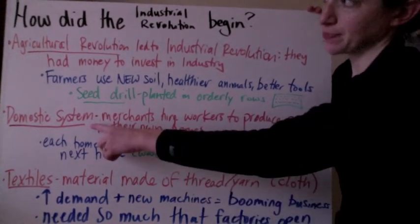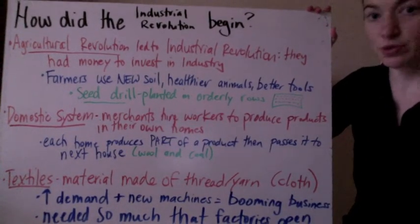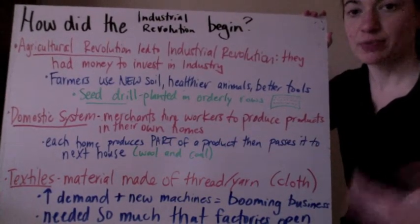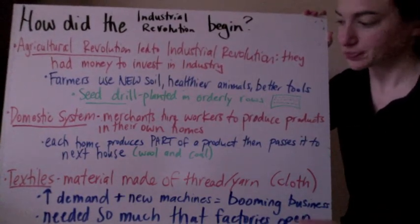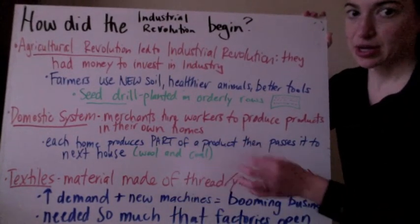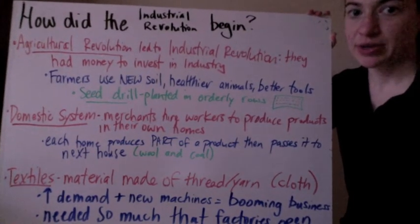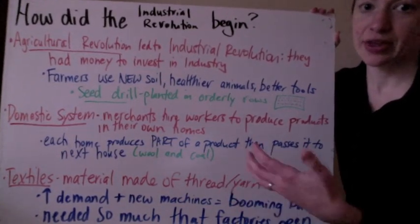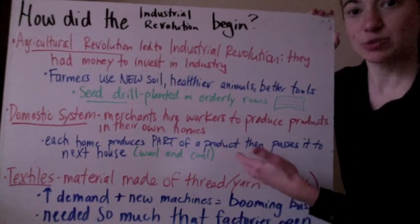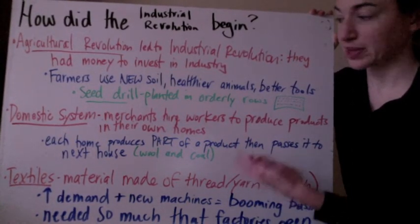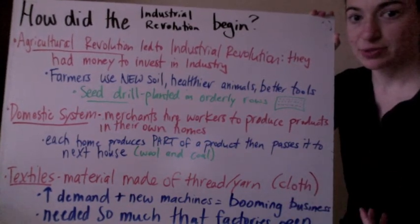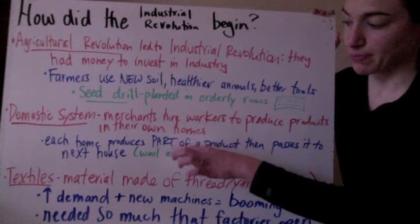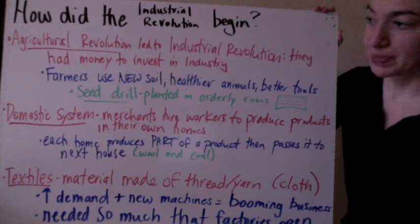The domestic system is another thing that's going to lead to the revolution. This is when merchants — people that sold things — would hire workers to produce products in their own homes. You'd pay someone to make stuff that you can then sell. In this process, each home would produce a part of the product. If you were making wool, which was popular during this time, one house would shear the sheep, the next would clean the wool, the next would weave it, and the next might dye it. Each house was part of the production system.